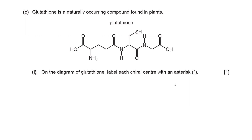To recall, a chiral center means the carbon which is bonded to four different groups in a chiral molecule. Sometimes it can be more than one carbon that is like this. We need to find all of them. Remember, all four groups must be different.